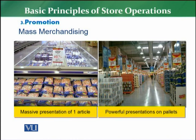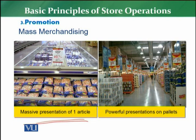Now let's look at mass merchandising and how it reflects in a picture. The first way is a massive presentation of one article — one article is presented massively, not mixed or merged with others. The customer can see the bulk display and feel that the retailer is offering a very competitive price because of the large quantity displayed. This gives the customer a completely different reading.